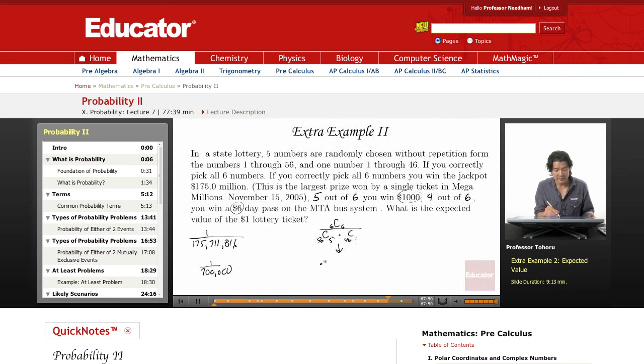In the interest of saving time, I'm going to write this out in entirety. We have 1 over 175,711,816. Then we're going to multiply this by 175 million. And this equals, in this case, it comes out to about 0.996.